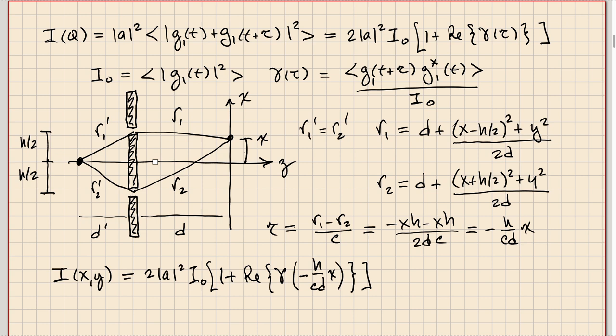Now we ask: what happens if you have more than one source? Then things get a little interesting — a little less trivially related to temporal coherence. Let's look at what happens with the two-pinhole experiment if we have multiple point sources.